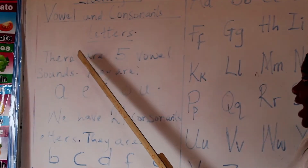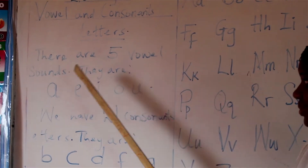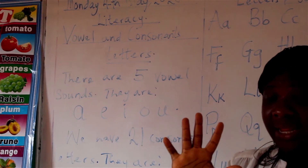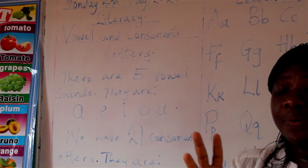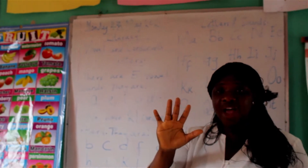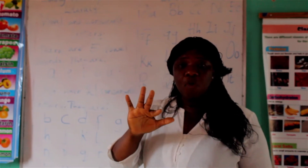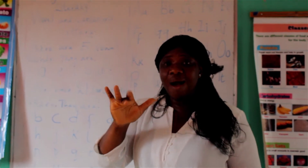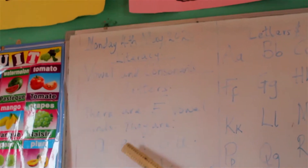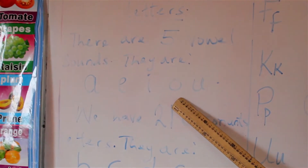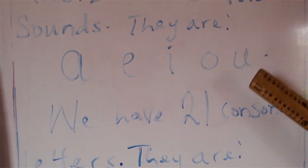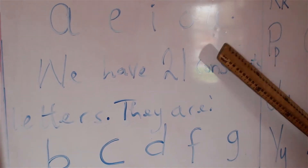There are five vowel sounds. We have five vowels: A, E, I, O, U. These are the vowel sounds — A, E, I, O, U. They are also from the letters of the alphabet.